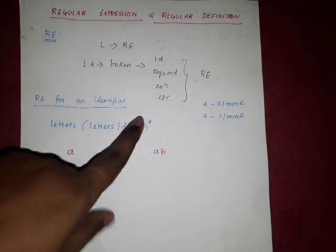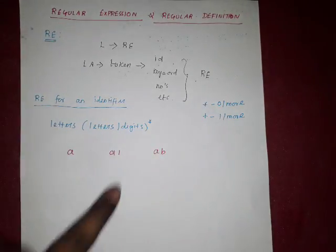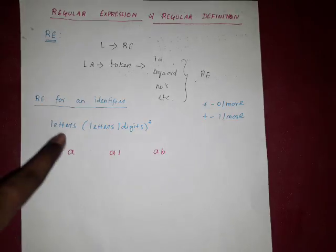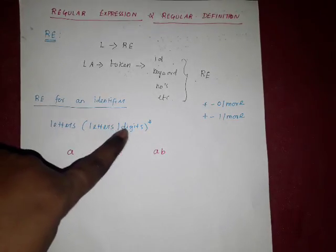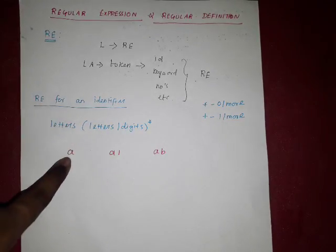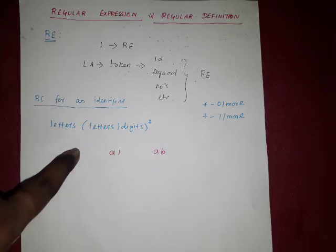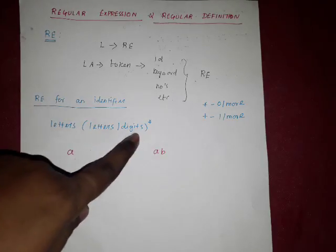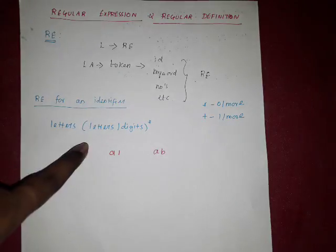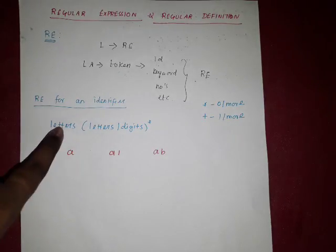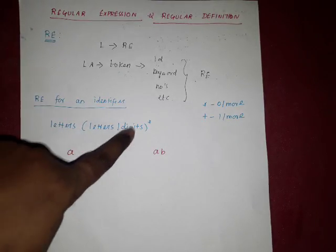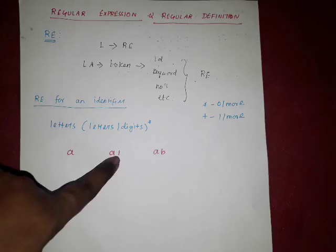Star represents 0 or more times. If the star is 0, that means letters only are present, so just 'a' satisfies the condition. If letters or digits occur one time — for example, letter 'a' followed by digit '1' — then that condition is also satisfied.